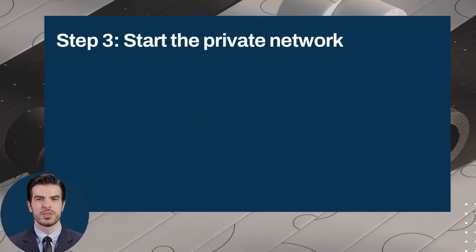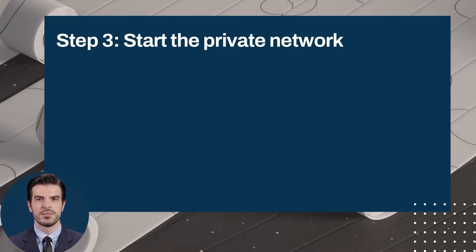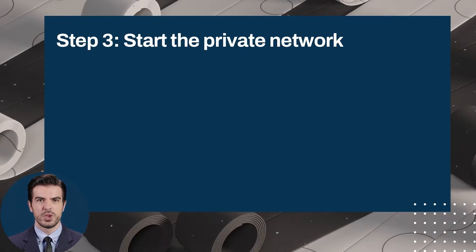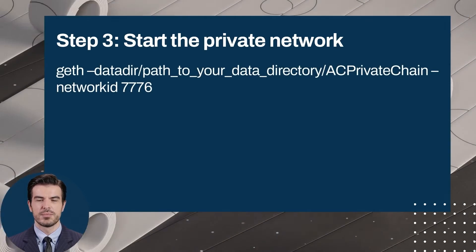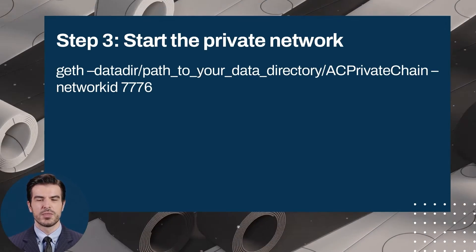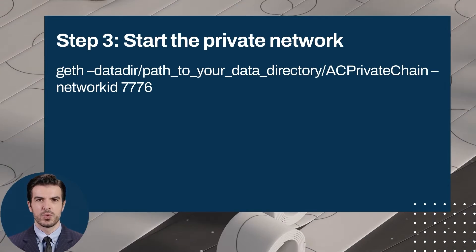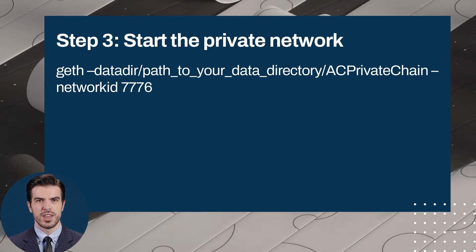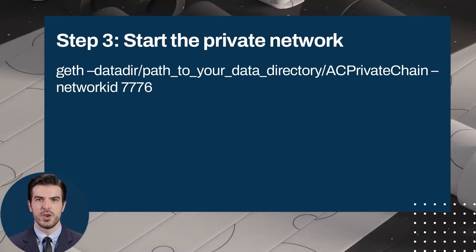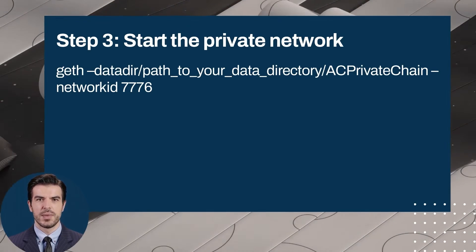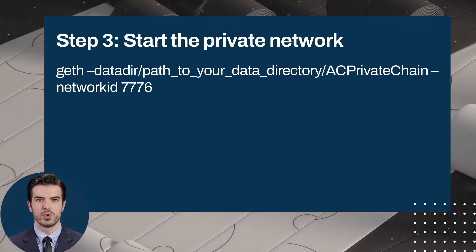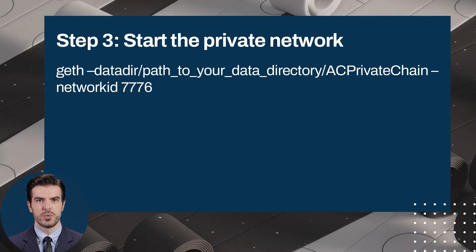Step 3: Start the private network. We have created a Genesis block. Now you can run our private network so that we, or other nodes if you created several, can add new blocks. To do this, in the Geth console, you need to initiate the command. This command instructs Geth to launch a private blockchain and use the specified directory — path to your data directory; replace it with the address of the desired folder. The command also has the identifier 7776; it should be replaced with an arbitrary number that is not equal to the identifier of networks already created. For example, the identifier of the main Ethereum network is networkid equals 1, and networkid equals 7776 should not be used either, otherwise you will connect to the network we have created for this guide.